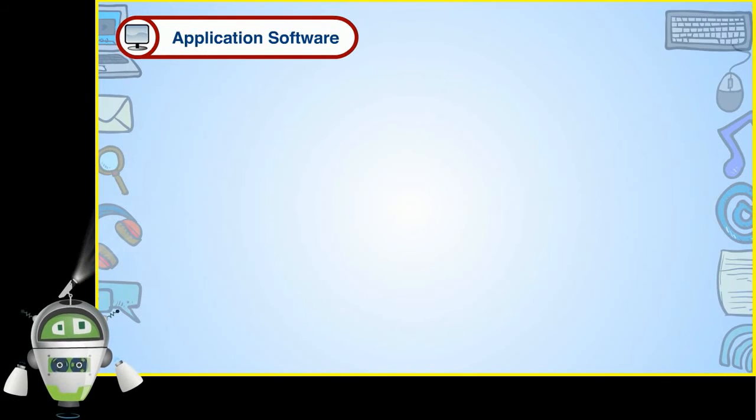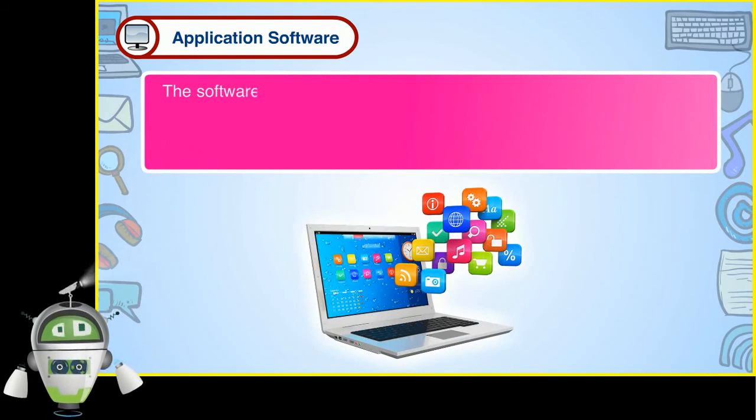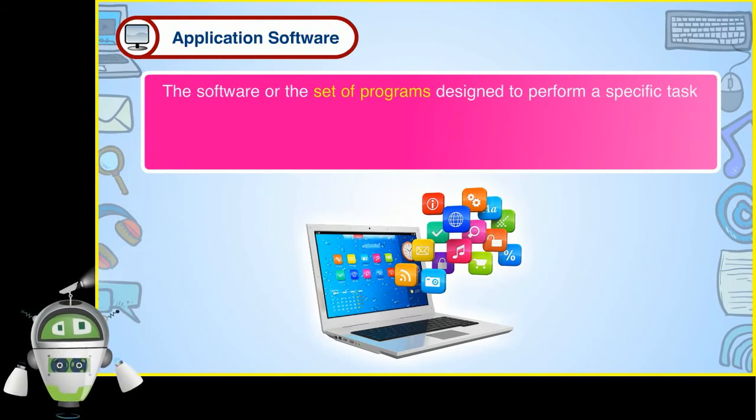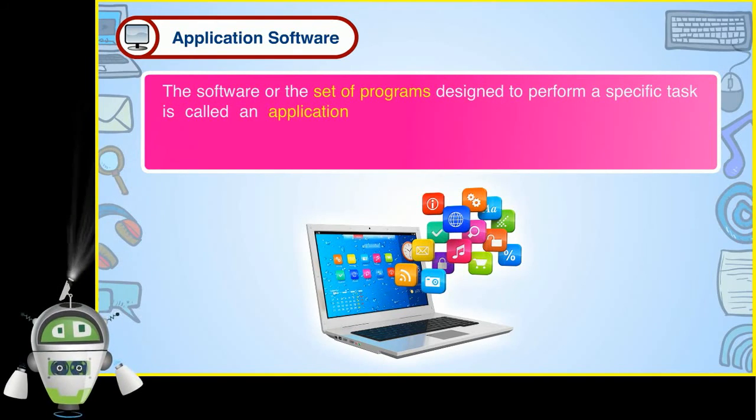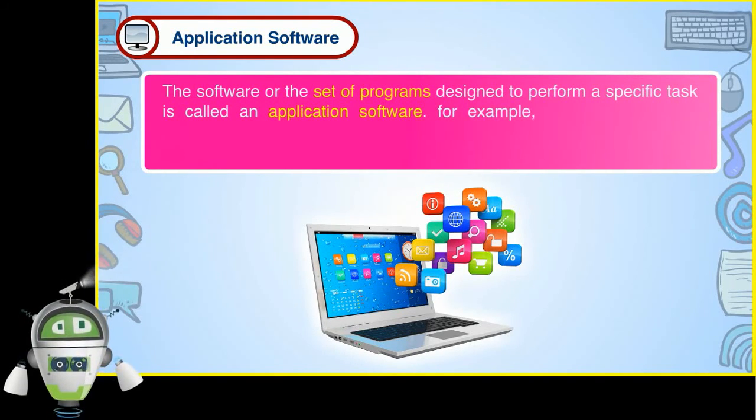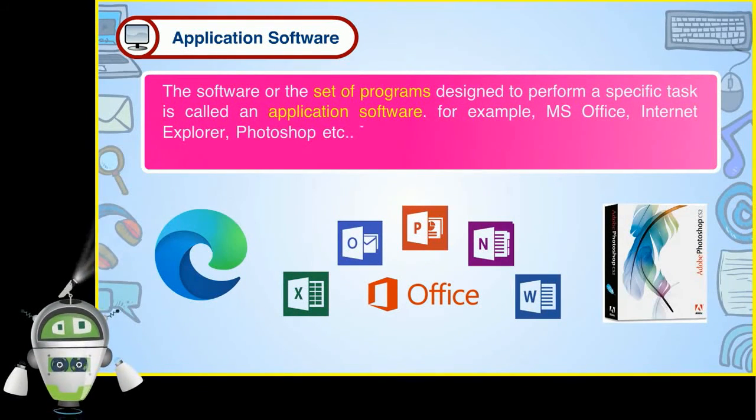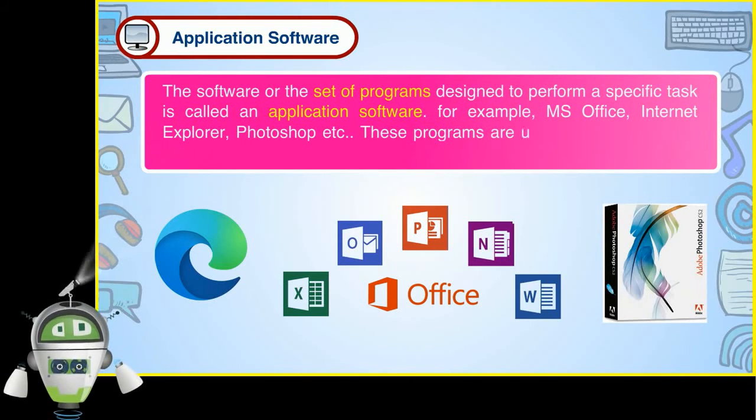Application software: The software or the set of programs designed to perform a specific task is called an application software. For example, MS Office, Microsoft Edge, Photoshop, etc. These programs are user-friendly and highly interactive.